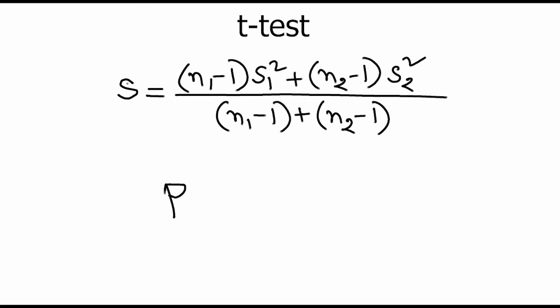For a paired t-test example, consider a small class where students went through a crash math course. We want to evaluate the performance of students before and after the math crash course, and this can be done using the t-test. We collect samples before the crash course, evaluate the data, collect samples after the crash course, and evaluate that data. The sample data should be collected from the same group before and after the crash course, and then the t-test is performed.